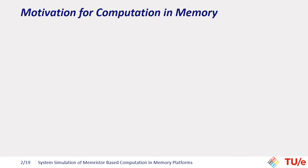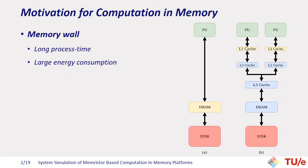Why computation in memory? Conventional computer architectures, the so-called von Neumann architecture, suffer from the memory wall. For data to be processed on these platforms, it should be moved back and forth between the processing unit and memory unit. To alleviate the problem, architects have introduced several levels of caches. However, even these platforms fall short in meeting the requirements of new data-centric applications like neural networks.